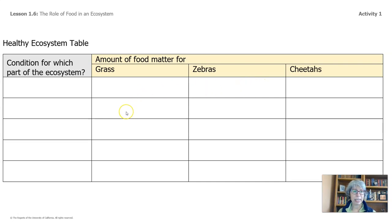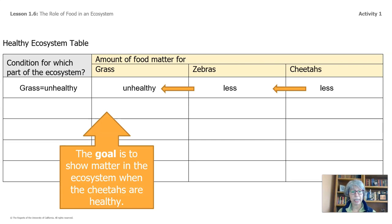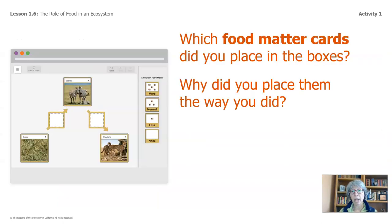Let's try with an example. If we said that the grass was unhealthy, what would that do to the zebras? We would have unhealthy grass, so there would be less food matter for the zebras. Now if there's less food matter for the zebras, how would that affect the cheetahs? Well, there would be less food matter for the cheetahs as well. See how everything is connected? The goal here is to show matter in the ecosystem when cheetahs are healthy. So pause the video and work through different conditions in the ecosystem, and then your last one should be healthy conditions for the cheetah. Which food matter cards did you place in the boxes? Why did you place them the way you did?